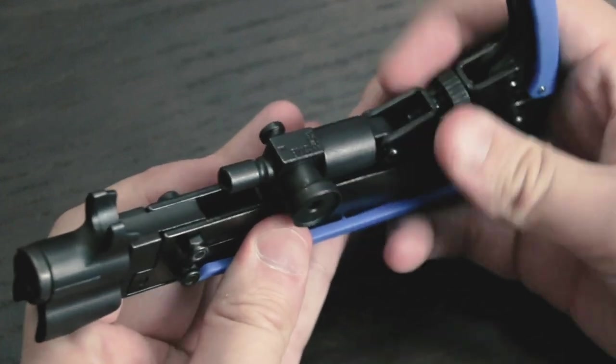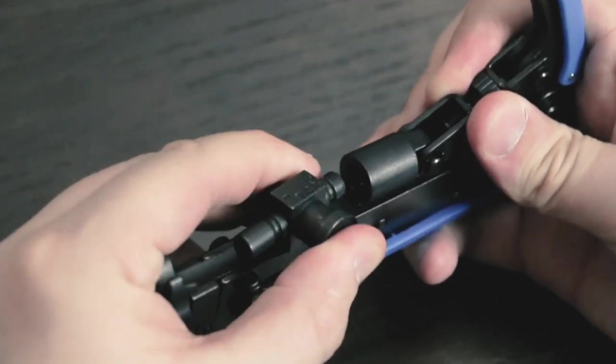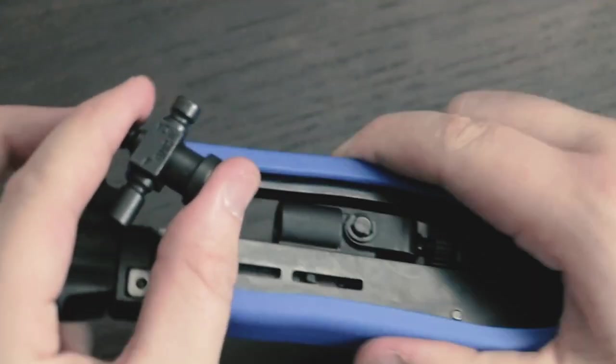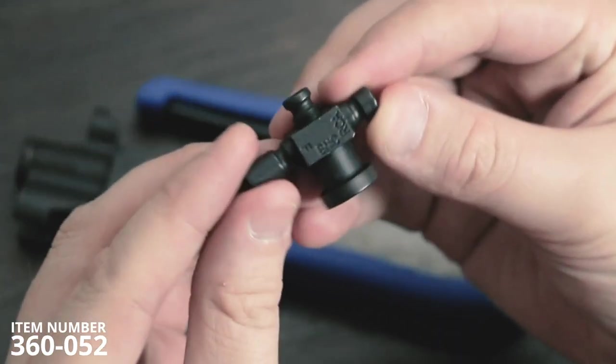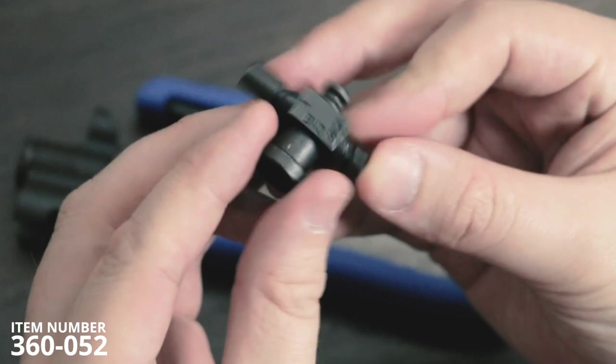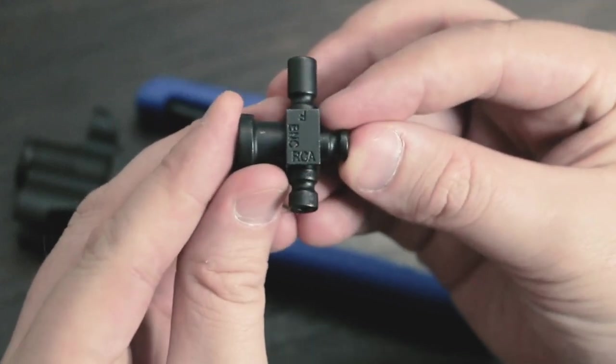The interchangeable precision carbon steel die and handle hold up to everyday use and make a tight compressed seal for F, B and C, and RCA compression connectors.